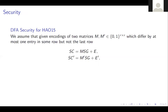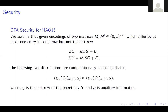Because we modify an existing FHE scheme we introduce a new security assumption: DFA security for the HA015 scheme. The idea is: given two matrices M and M' with entries in {0,1} that differ by at most one entry in some row (but not the last row), with encodings satisfying S·C = MSG + E and S·C' = M'SG + E', we say HA015 is DFA-secure if the following two distributions are computationally indistinguishable: given the last row of the secret, all encoded matrices for the alphabet, and possibly auxiliary information, you cannot distinguish M from M'.